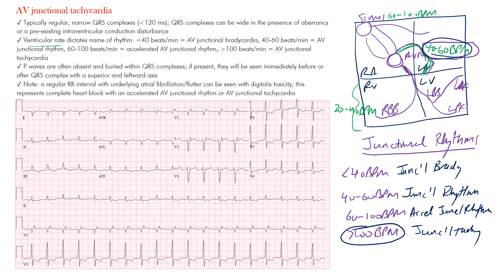The ventricular rate dictates the name of the rhythm. For AV junctional tachycardia — over 100 beats per minute — the impulse originates from the junctional region, travels anterogradely down the ventricular system to innervate the ventricles. There's also retrograde conduction that can occur, in which you may actually see P waves. The QRS complexes occur because of ventricular depolarization, but retrograde conduction to the atria can also cause atrial depolarization and P waves. Because they're occurring almost simultaneously, they may be buried within one another.